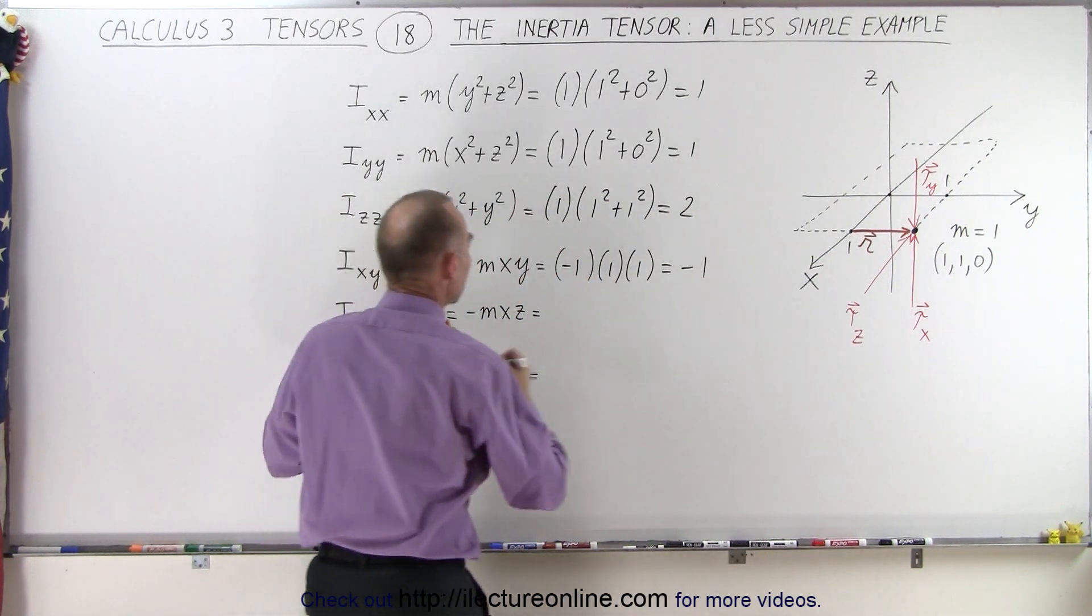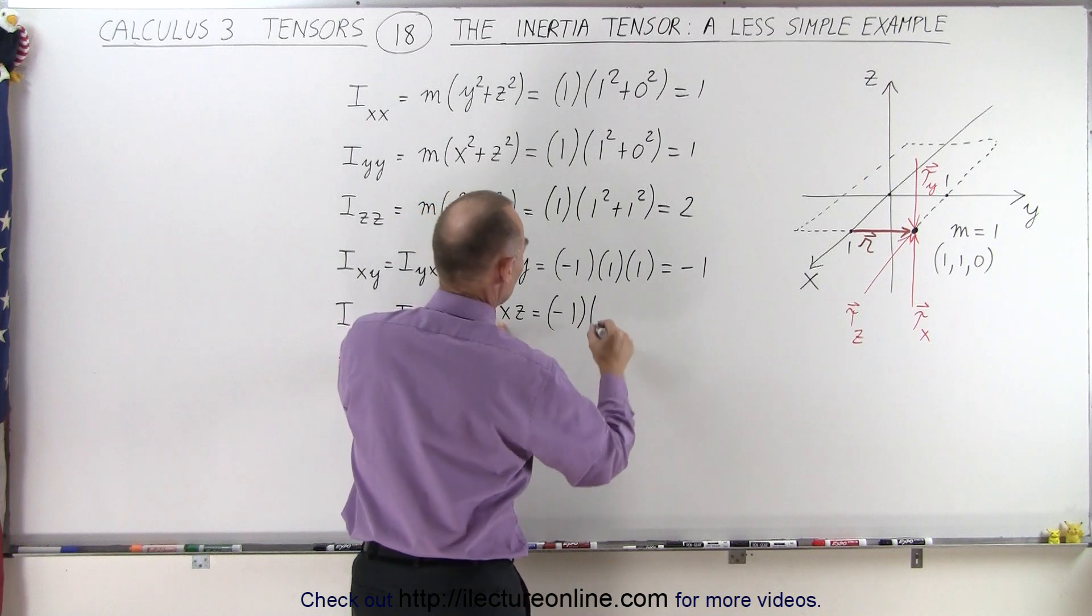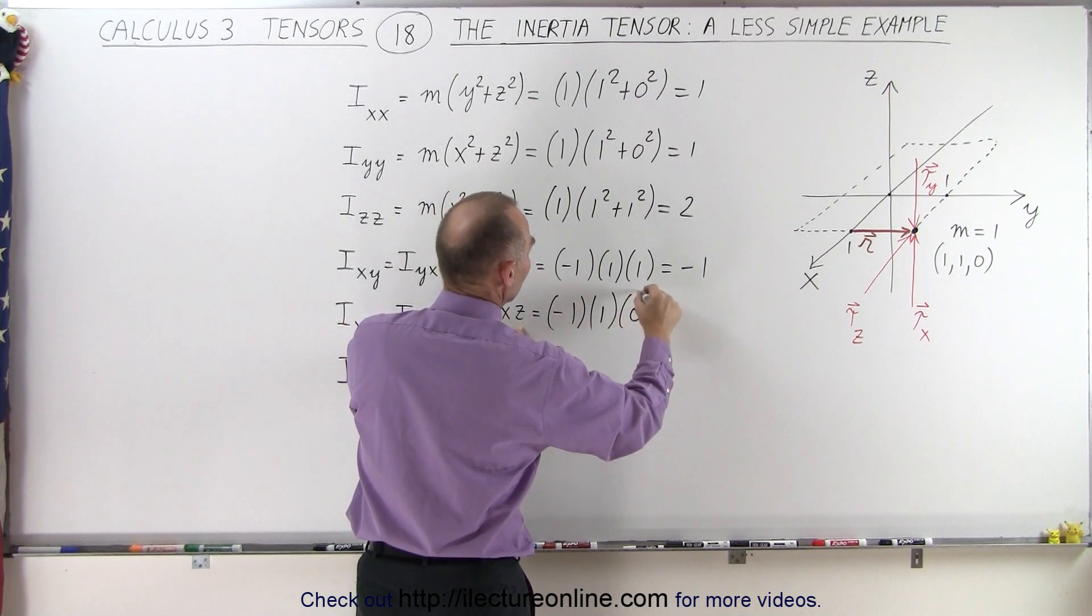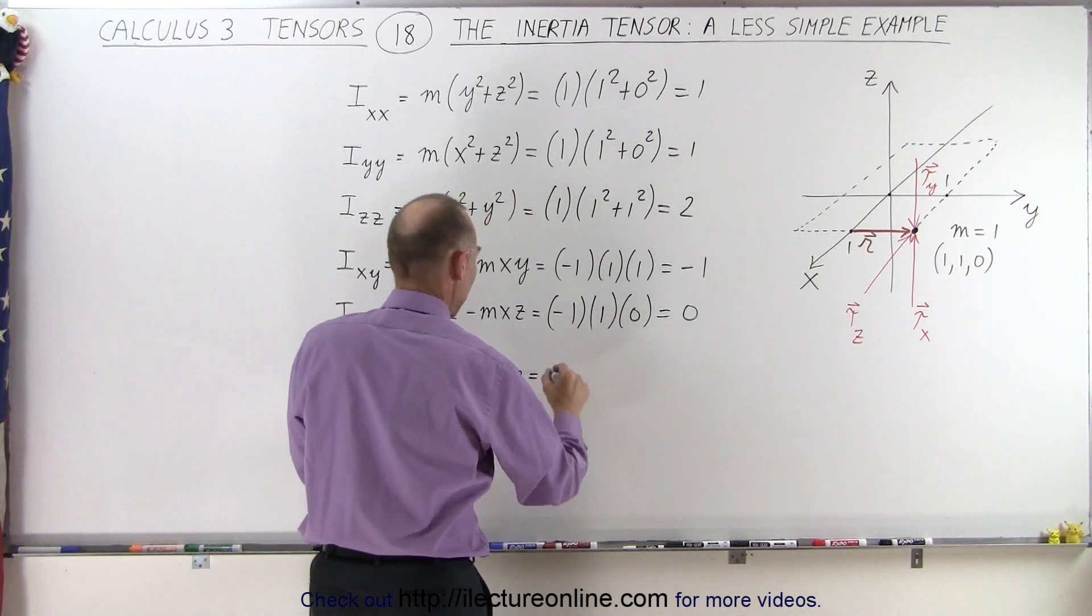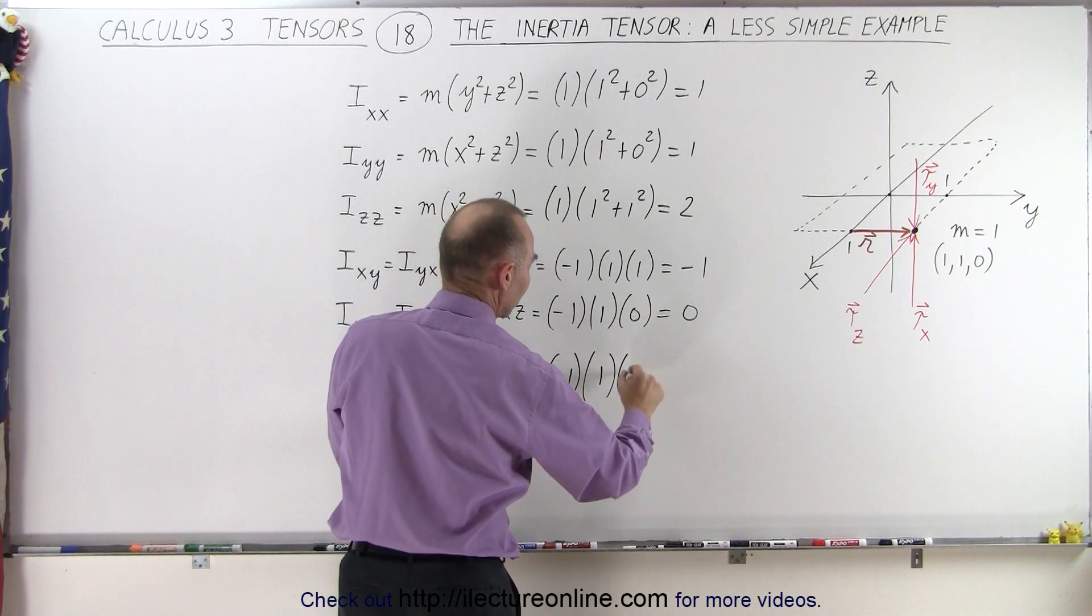Okay, let's see if we have any terms here that are not equal to 0. Minus 1 times x, which is 1, times z, which is 0. And then here we have a minus 1 times y, which is 1, times z, which is 0.